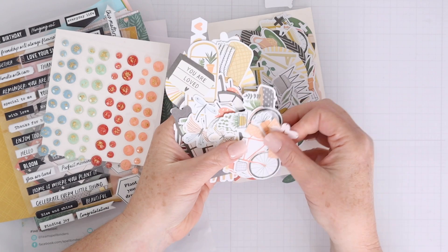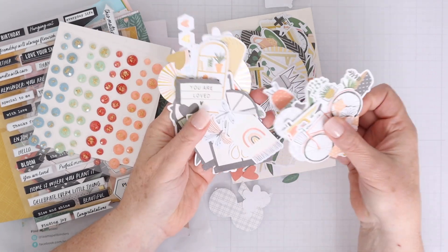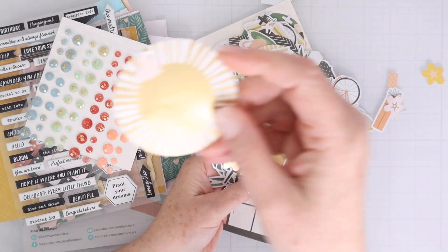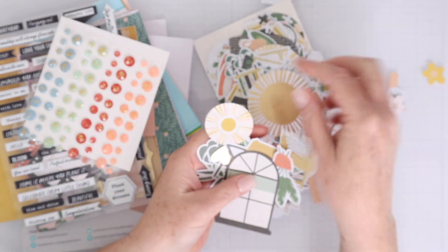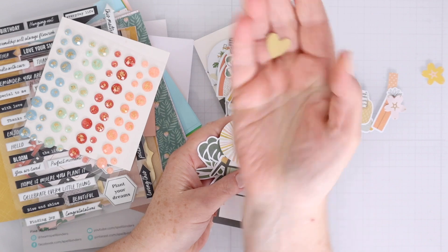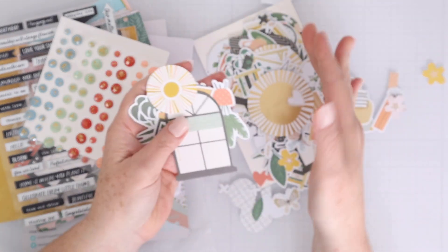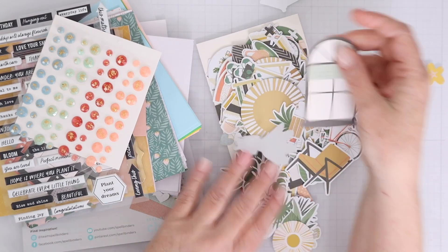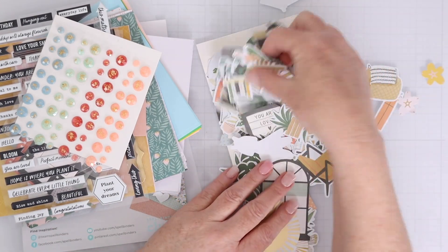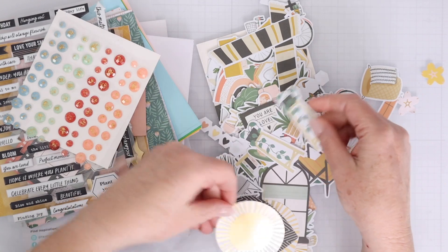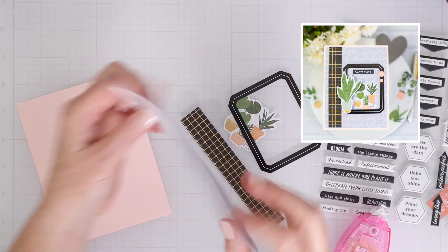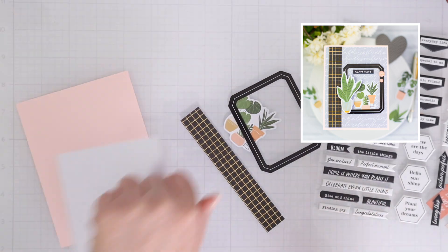And of course, my favorite is always the die cuts because you get so many of them. You can use a bunch to create clusters. You could use these in scrapbooking as well. And there are just so many different options. You still get some foiled elements in there too. I love all the plants this month. They're really going to be very versatile cards with all the greenery and all the different elements that are included in this kit. So let's make a couple of cards with the elements from the card kit.